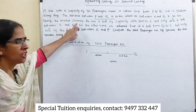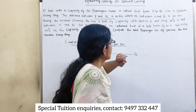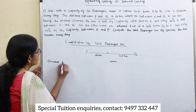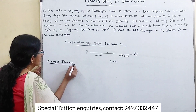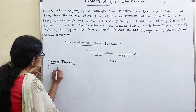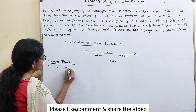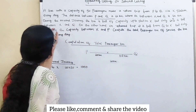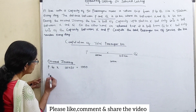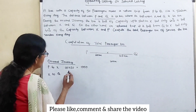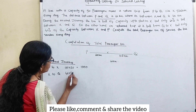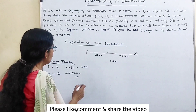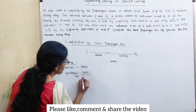During the onward journey, the bus is full to capacity up to station X. So P to X: 20 kilometers into 50 passengers equals 1000 passenger kilometers. Then only 60 percent of capacity is filled between X and Q: 40 into 50 into 60 divided by 100 equals 1200. So onward journey total is 2200 passenger kilometers.